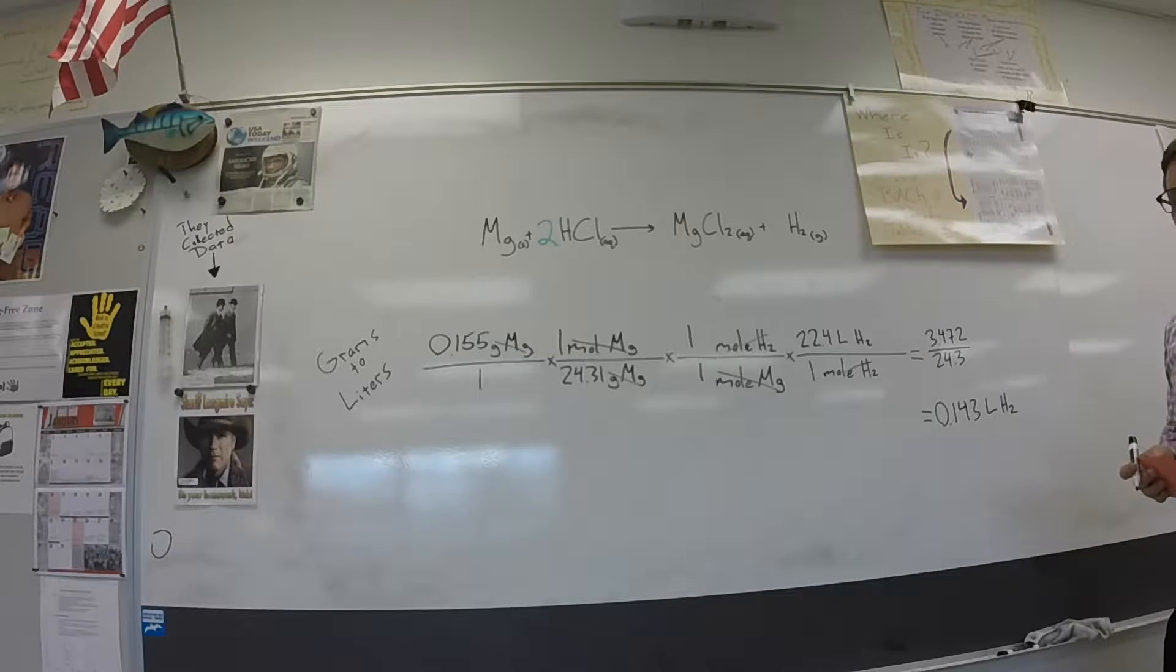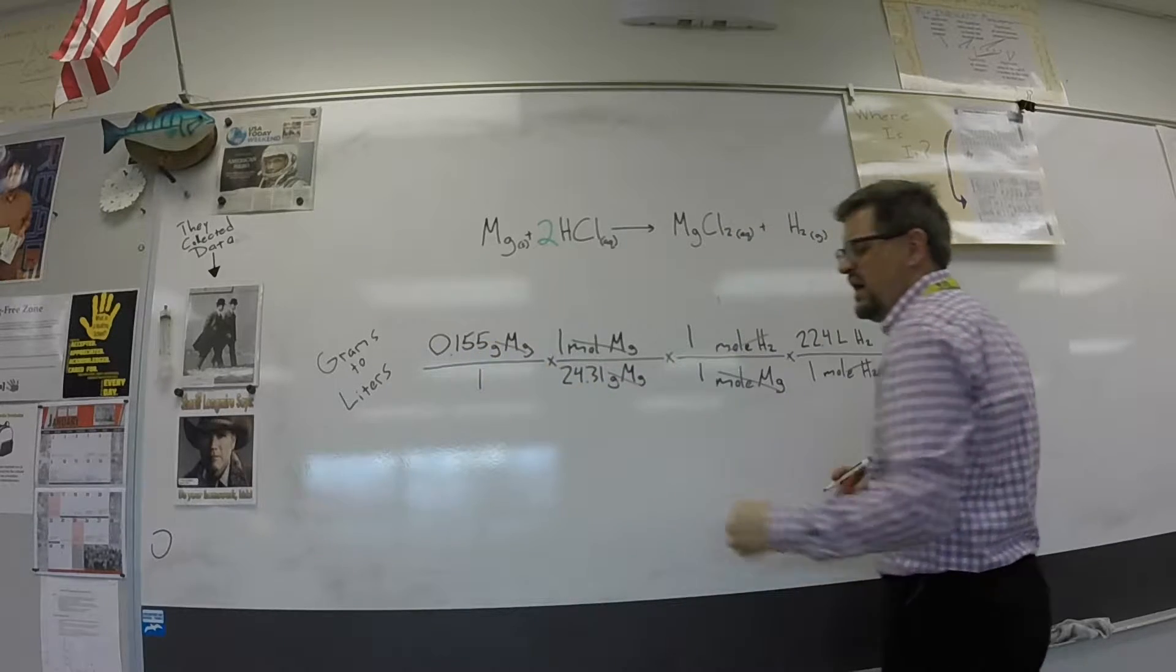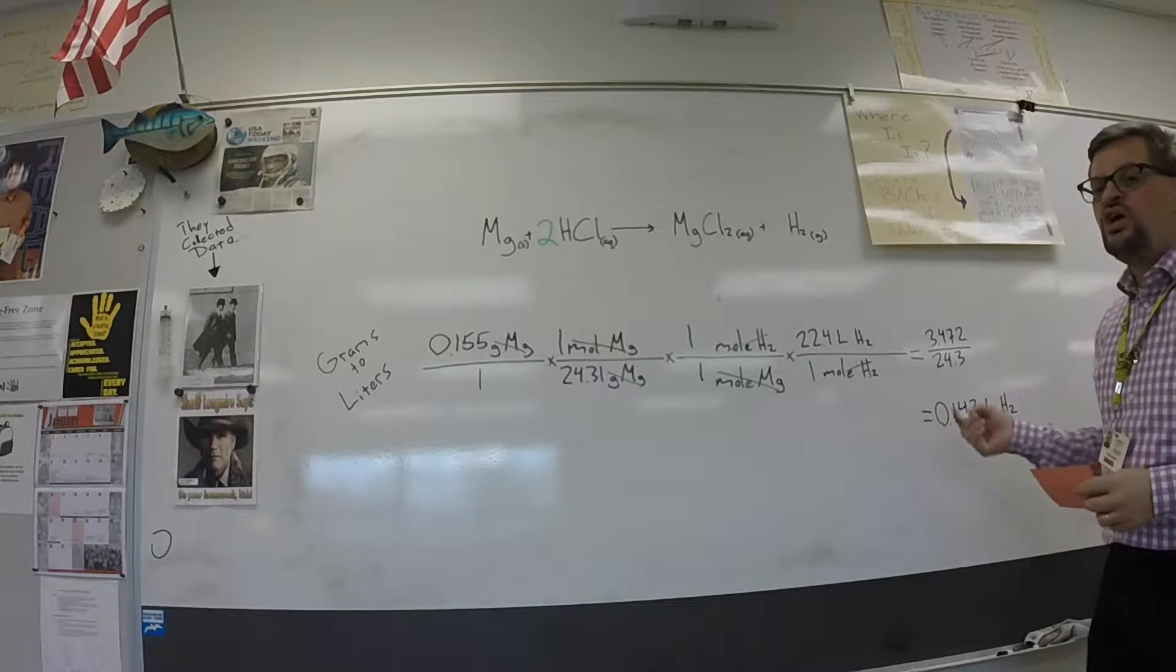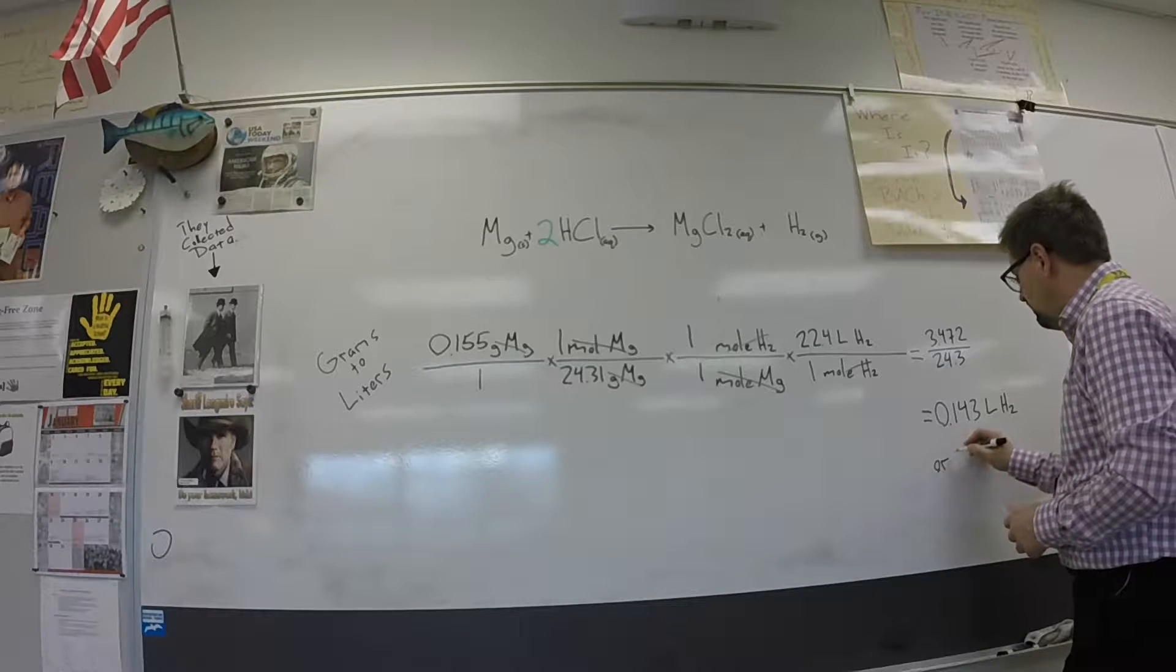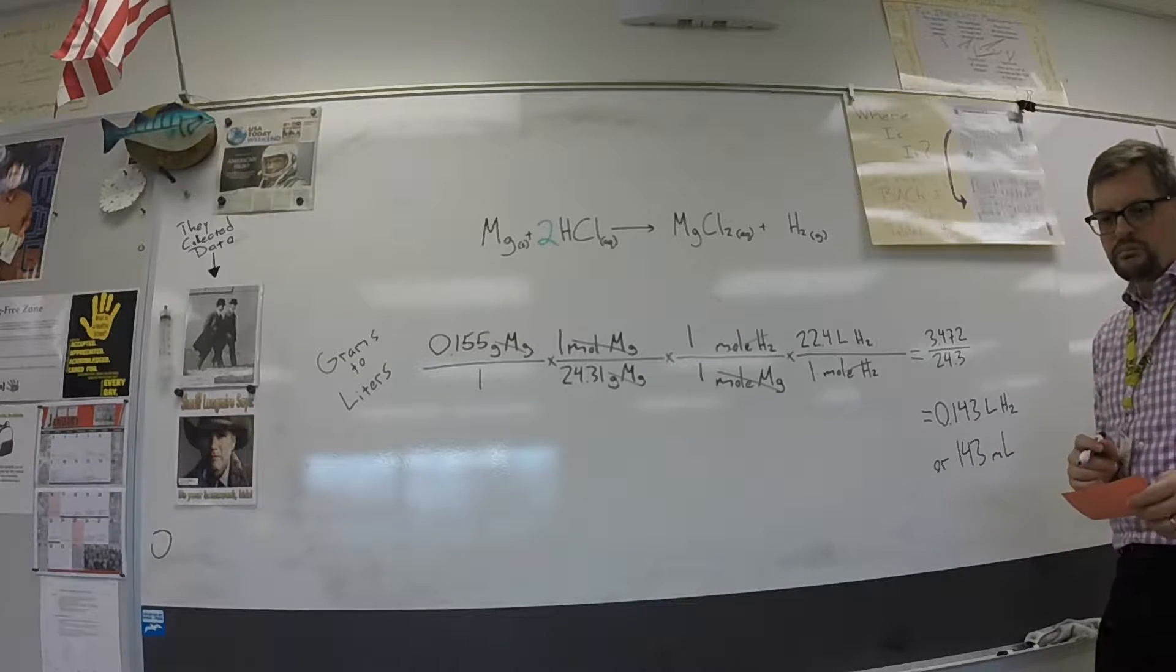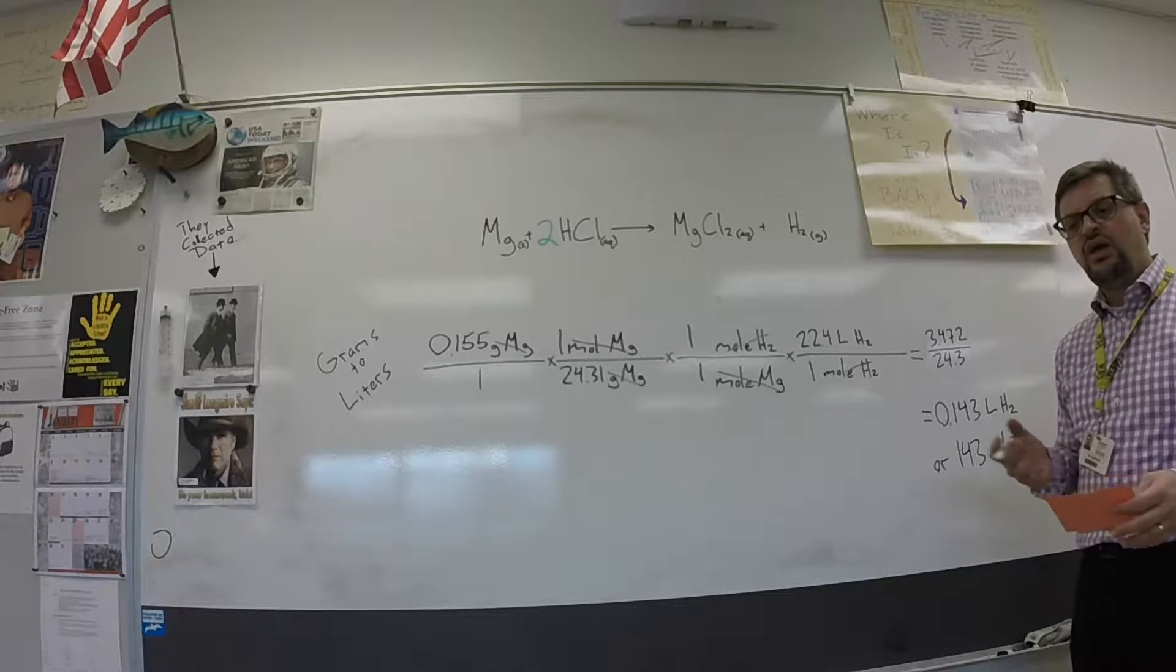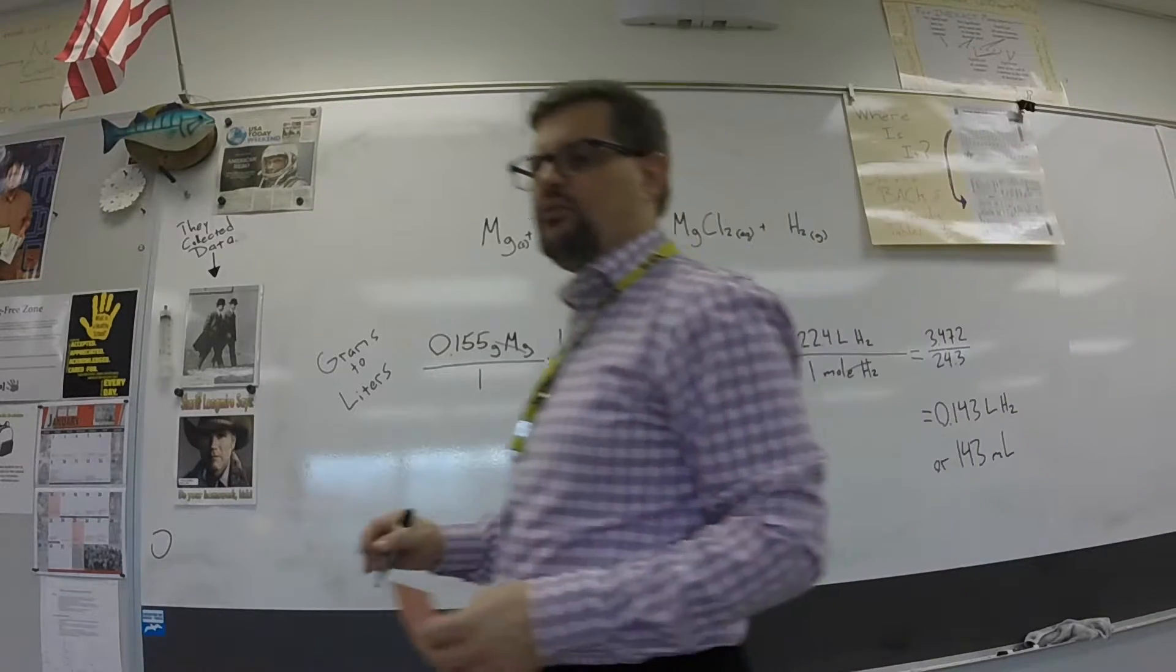So again, what that's saying is, if we put in 0.155 grams of magnesium into this reaction, we should get out 0.143 liters or 143 milliliters of hydrogen gas. Now let's see how that stacks up to what we actually got from the reaction.